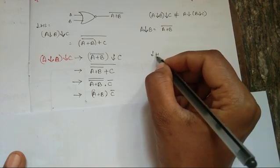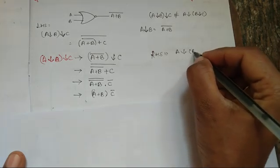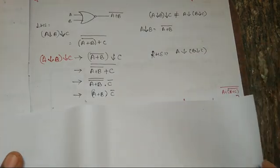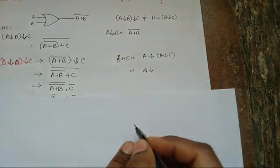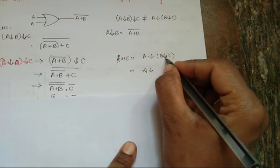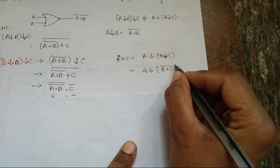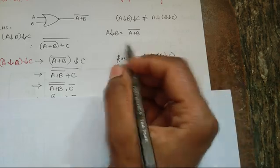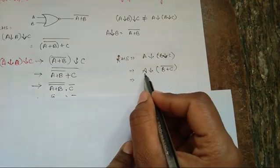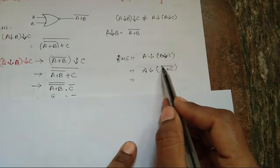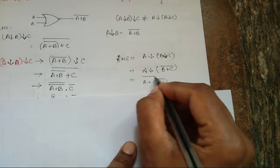Now let us take the RHS. The RHS is A NOR (B NOR C). Solving B NOR C first, by the order of precedence, it becomes B plus C whole bar. Next, using A NOR (B plus C whole bar), which equals A plus (B plus C whole bar) whole bar.